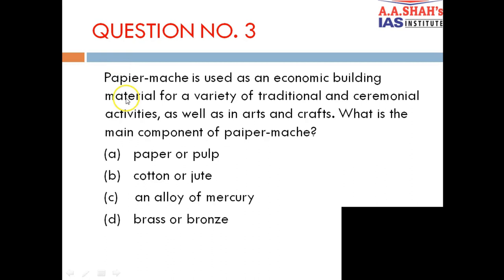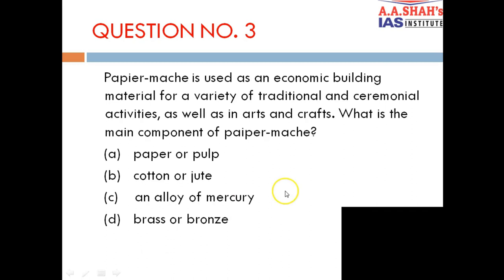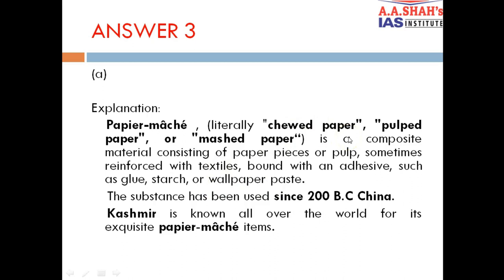Question 3: Paper mache is used as an economic building material for a variety of traditional and ceremonial activities as well as arts and crafts. What is the main component of paper mache? The correct answer is A — paper or pulp. Paper mache literally means chewed, pulped, or mashed paper. It is a composite material consisting of paper pieces or pulp, sometimes reinforced with textiles bound with an adhesive such as glue, starch or wallpaper paste. It has been used in China for 200 years, and paper mache items from Kashmir are famous worldwide.